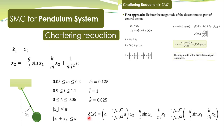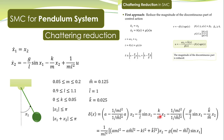We can simply rearrange things to write delta in a convenient form. We collect all terms containing x2 together and also the remaining terms. We take (1 over ml-squared) common from all the terms, and the rest of the terms are written accordingly. The remaining terms are similarly grouped.